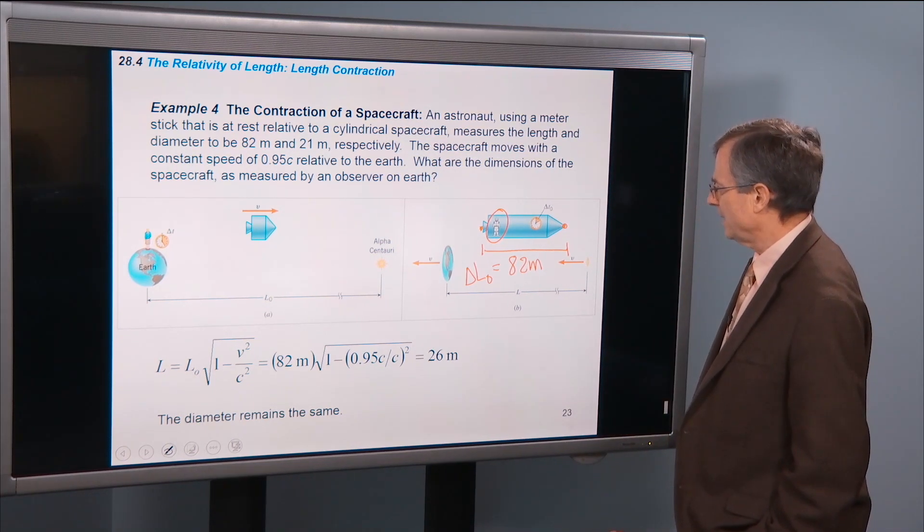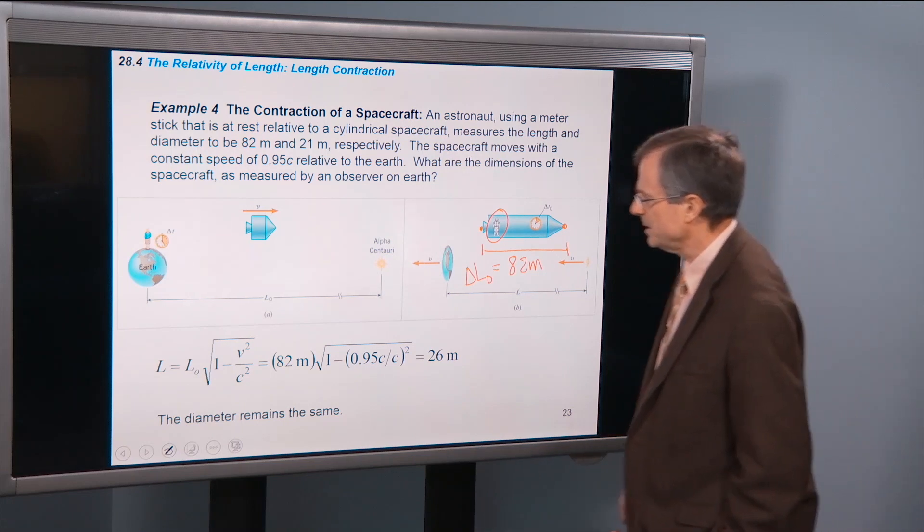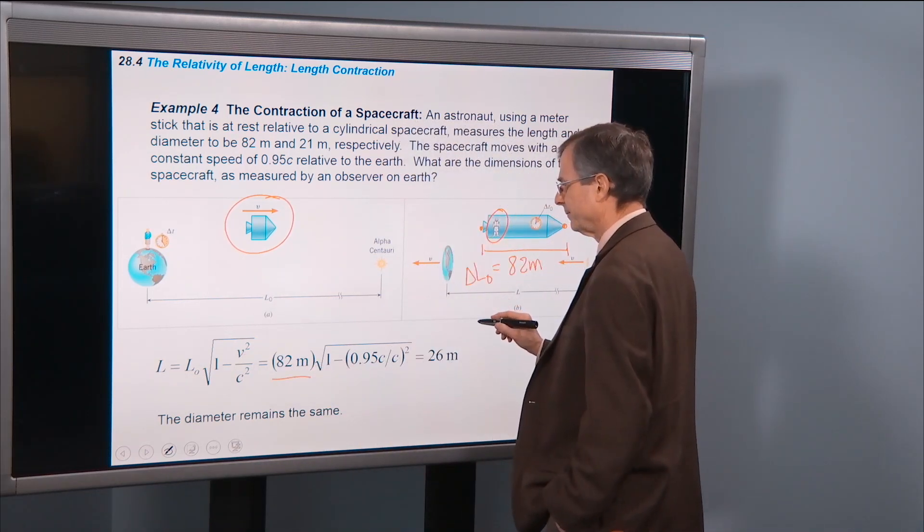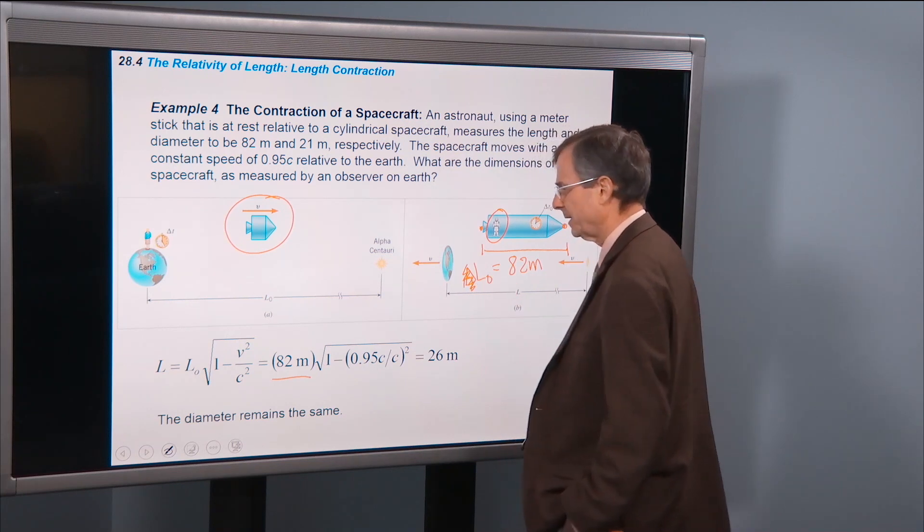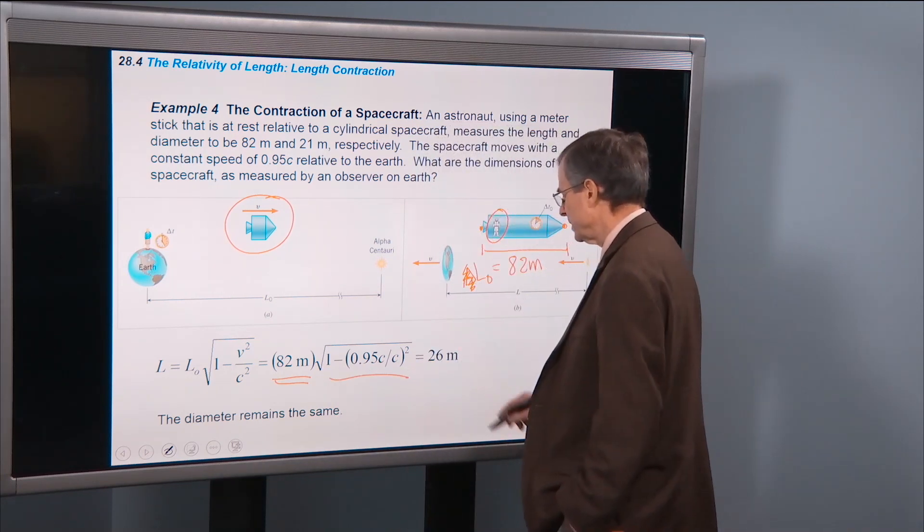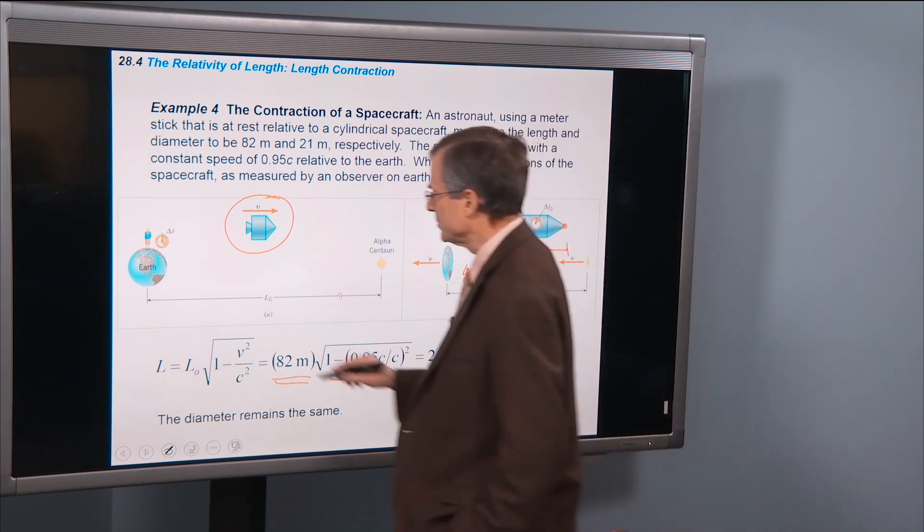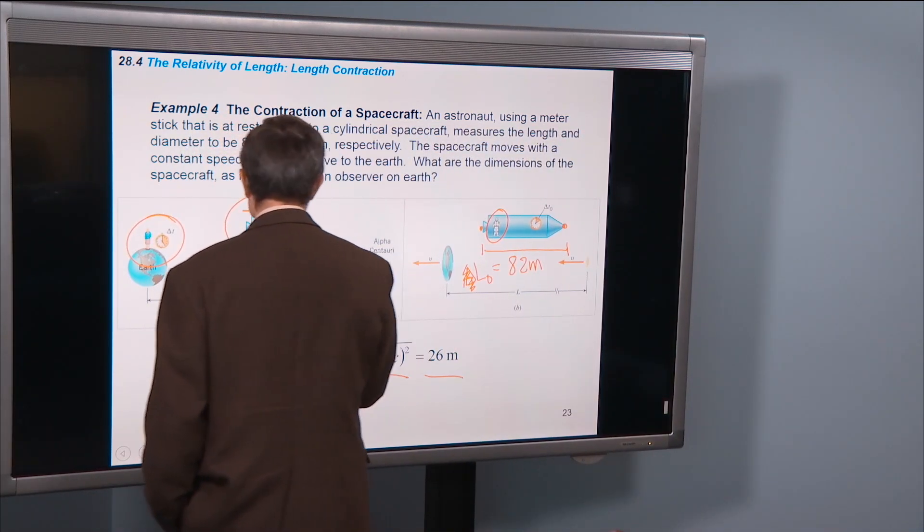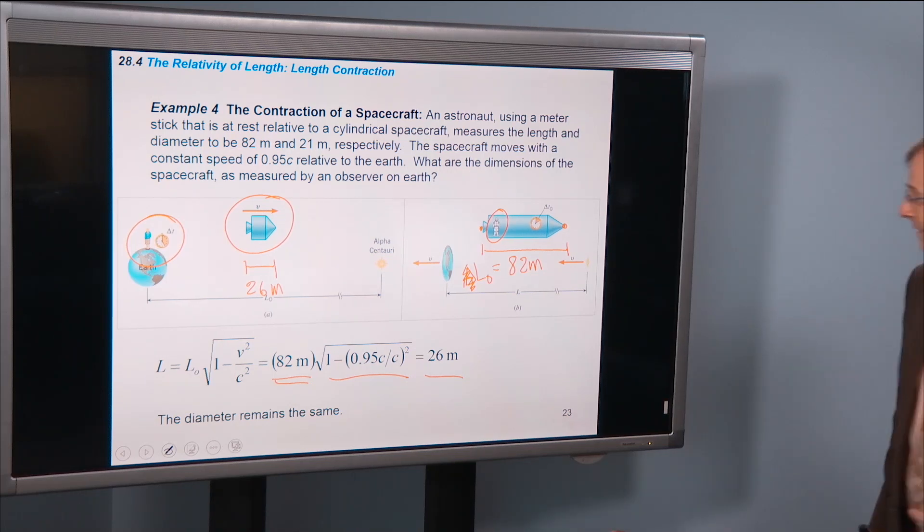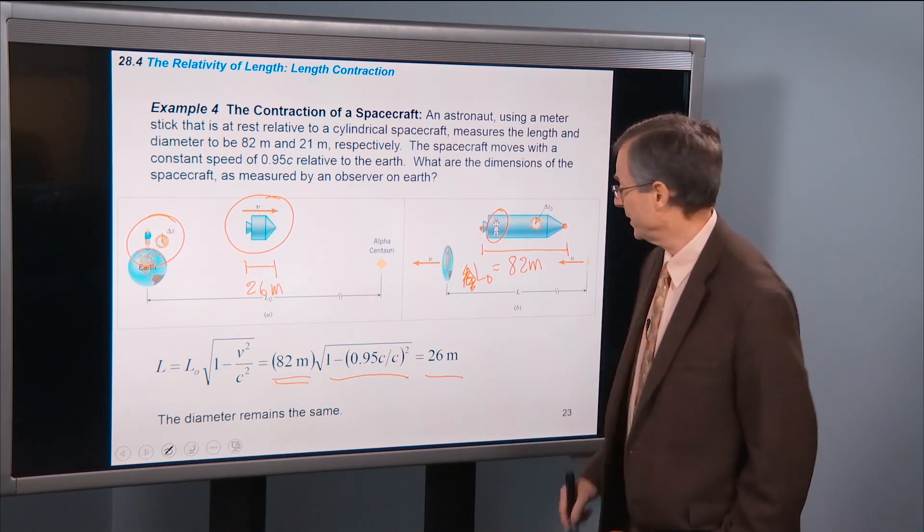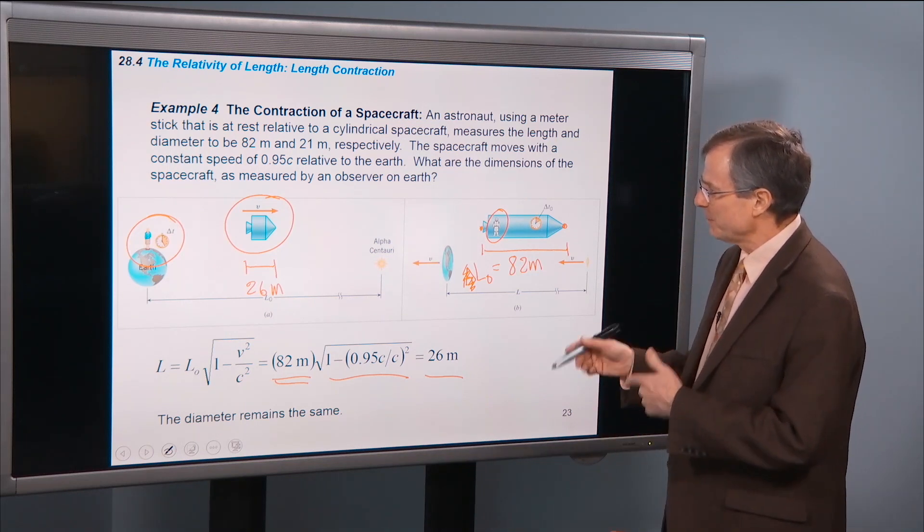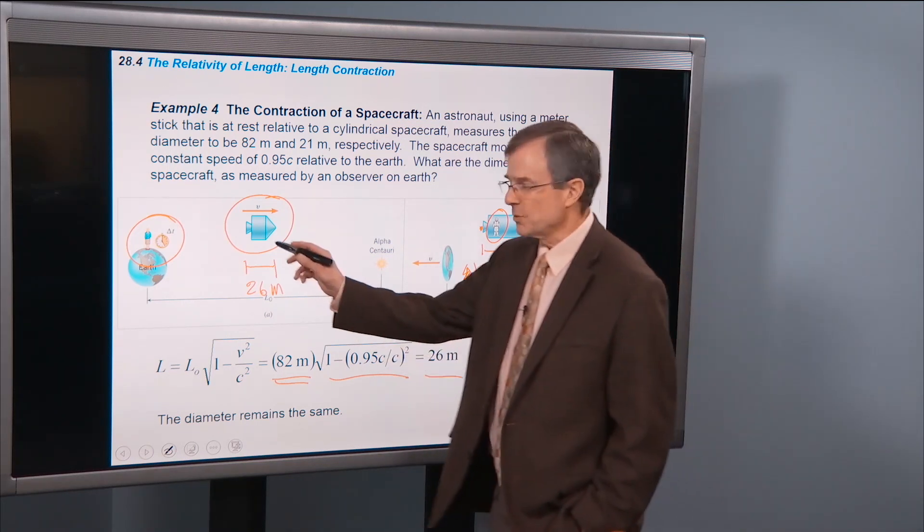So what about the contracted length seen by this other observer? It will be, we just actually plug in. The proper length, I'm sorry, this is L₀, not delta L₀, is 1 minus v squared over c squared. That's 82 meters, 0.95c over c. So the Earth-bound observer sees a spacecraft that's only 26 meters long. And it's kind of embarrassing, because how's everybody gonna fit on there? Is everything squashed? Are their bodies all squashed? Well, no. The astronaut over here says, fine, I'm doing fine. Everything's great. This spacecraft's 82 meters long. But from the perspective of the Earth-bound observer, he sees a squashed spacecraft.